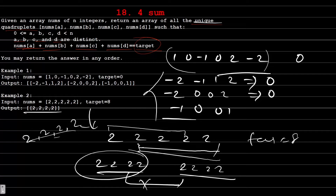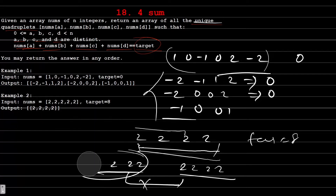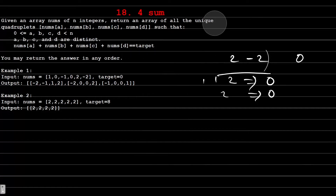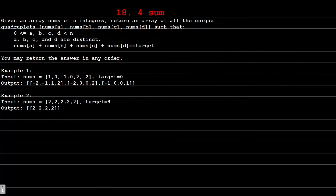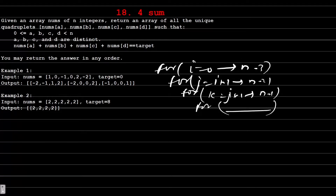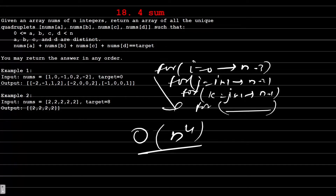Now how can we solve this problem? The naive or brute force approach will be to use four nested for loops — i from 0 to n-3, j from i+1 to n-2, k from j+1 to n-1, and one more inside. The time complexity for this is O(n^4) in the worst case, so obviously this is not the recommended approach.